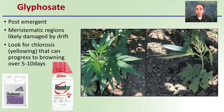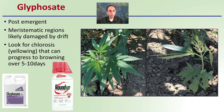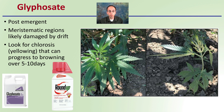Glyphosate — typically Roundup — is a post-emergent herbicide, meaning the weeds need to emerge before you spray them. It affects the meristematic regions and is likely to cause damage via drift on hemp plants. You want to look for chlorosis, which is a yellowing that can progress to browning over five to ten days — it's a slow progression. We can see that evident here, where it's a little lighter in that yellow coloration. This would be clear signs of glyphosate drift on your hemp plants.